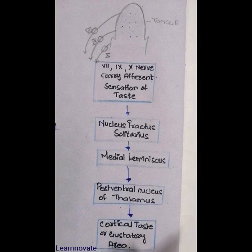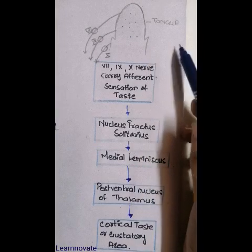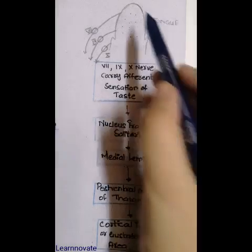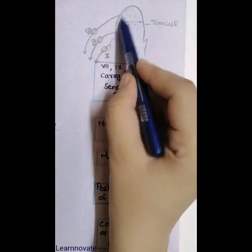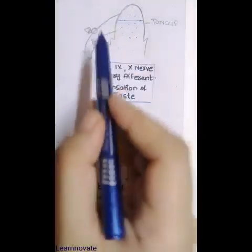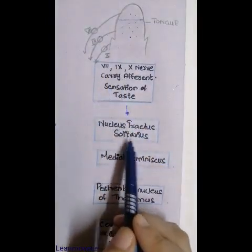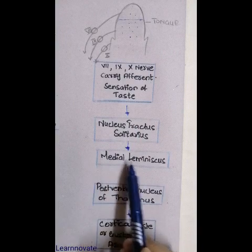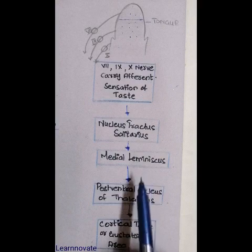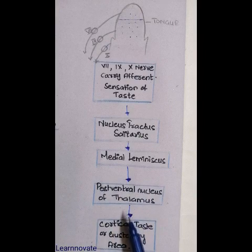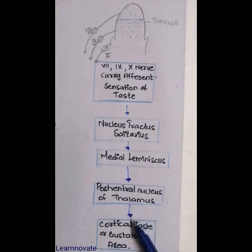In summary, taste fibers are first carried from the taste buds through three nerves: the lingual branch of the facial nerve carries the anterior tongue, the glossopharyngeal supplies the posterior tongue, and the vagus nerve carries the remaining part. These three nerves send signals to the nucleus of tractus solitarius, where second-order neurons synapse and ascend via the medial lemniscus pathway to relay at the post-ventral nuclei of the thalamus, and then pass to the opposite cortical gustatory area of the cerebral cortex.